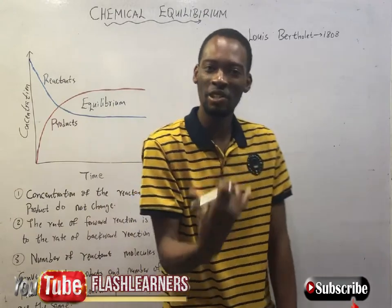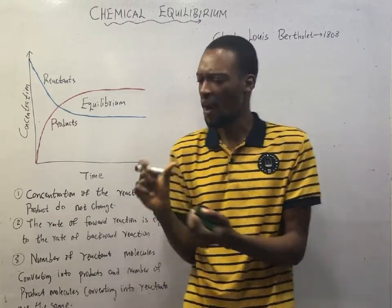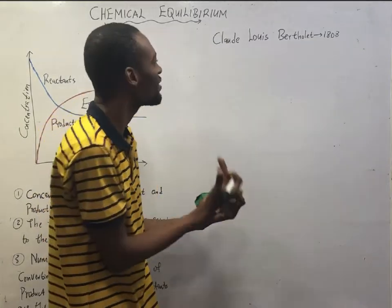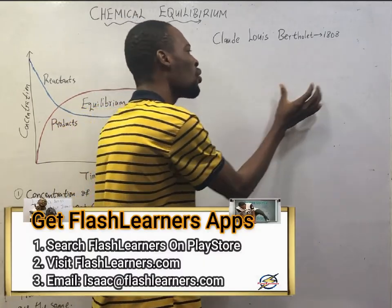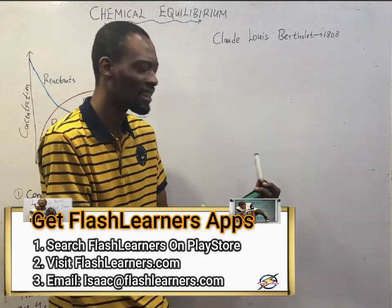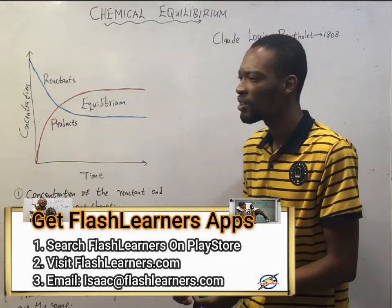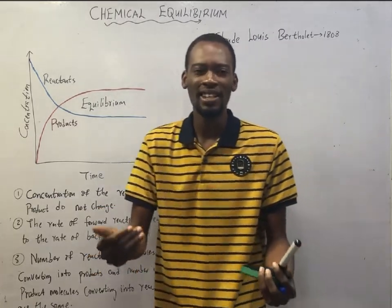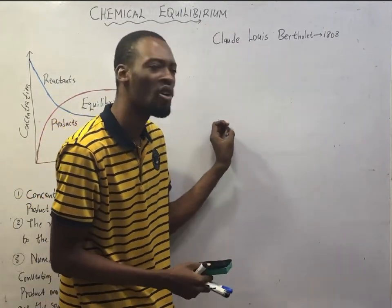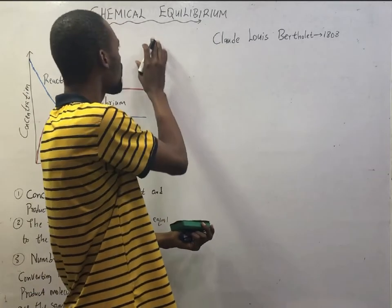Chemistry is the study of the composition, properties, and uses of matter. Matter is anything that has mass and occupies space. It exhibits physical and chemical properties. Physical properties of matter are properties we can see or easily inspect — for example, color, texture, volume, density, boiling point, and melting point. Chemical properties are only observed when matter undergoes change to form new substances.